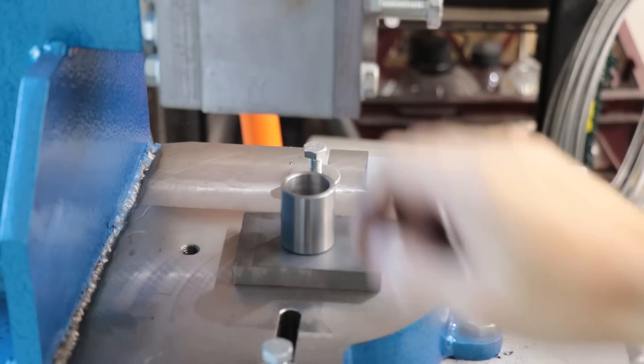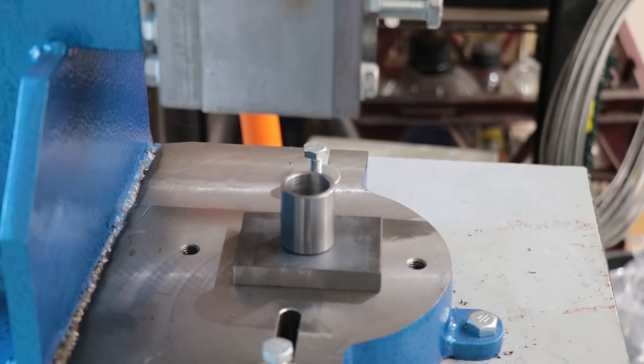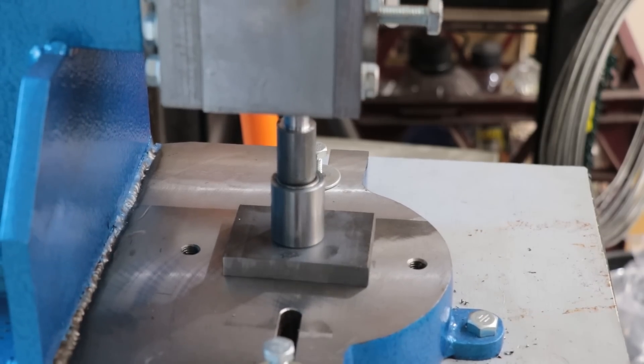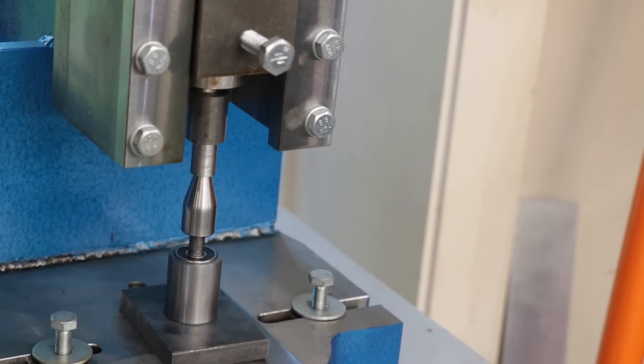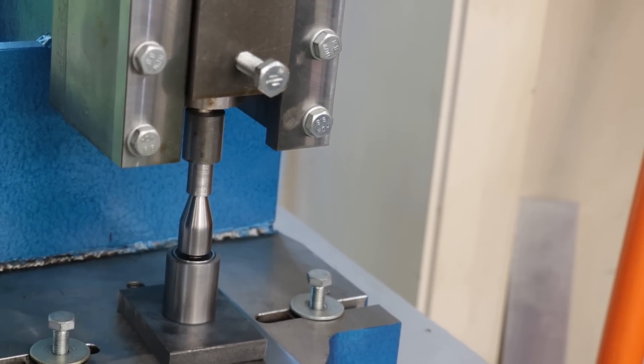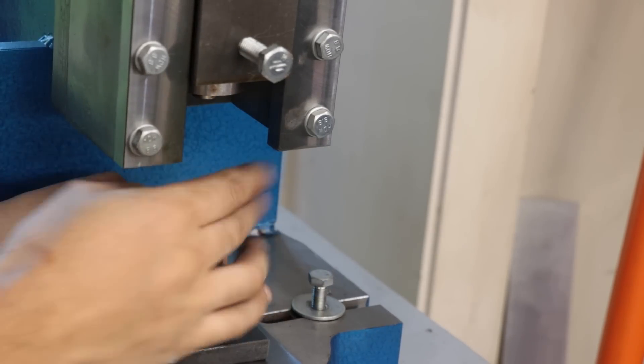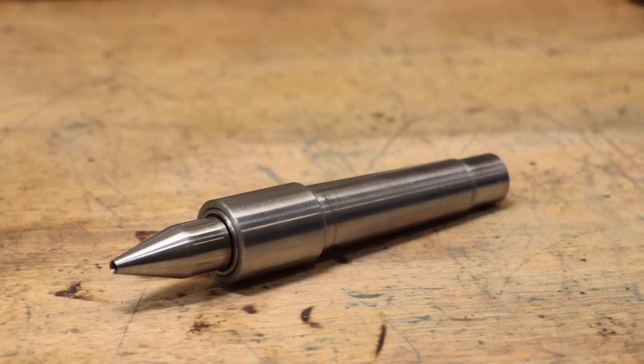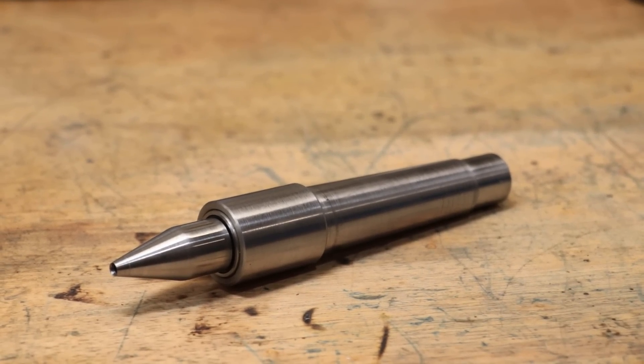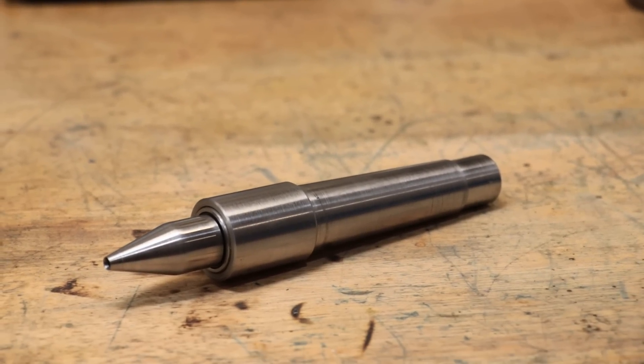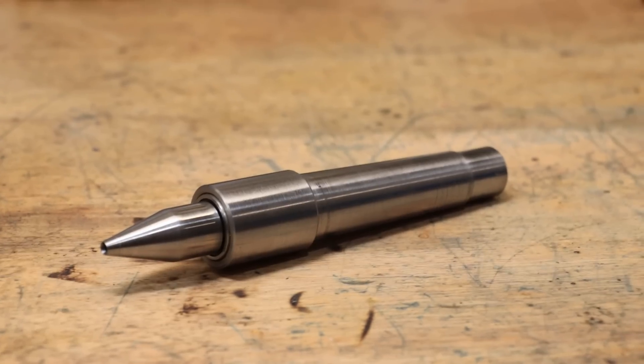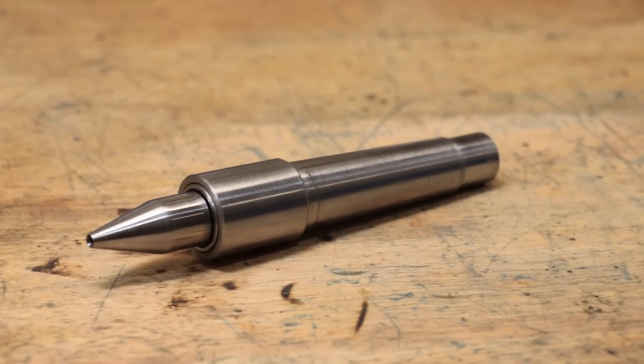Finally the parts can be pressed together in the fly press. Alright, and that's the center now done. All in all I think it turned out looking really nice, but the real test is going to be in the lathe. So let's get it in the lathe and see if it works.